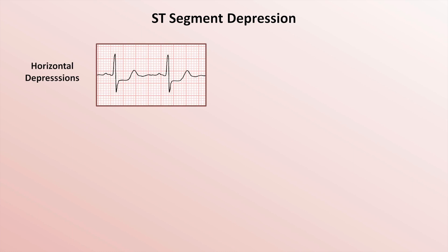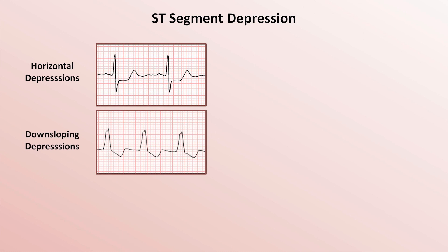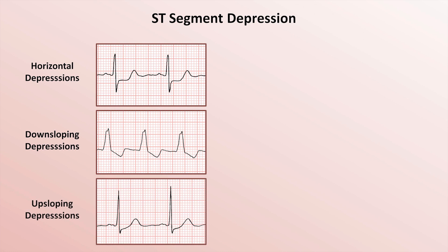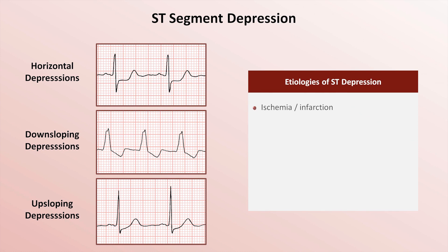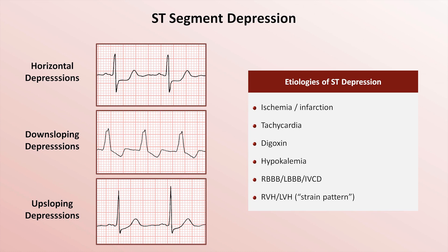When it comes to ST depressions, there are three morphologic subtypes: horizontal depressions, down-sloping depressions, and up-sloping depressions. Etiologies of ST depression include ischemia and infarction, tachycardia, digoxin, hypokalemia, conduction system disease, and ventricular hypertrophy — in which the combination of down-sloping depressions and T-wave inversions comprises the so-called strain pattern.